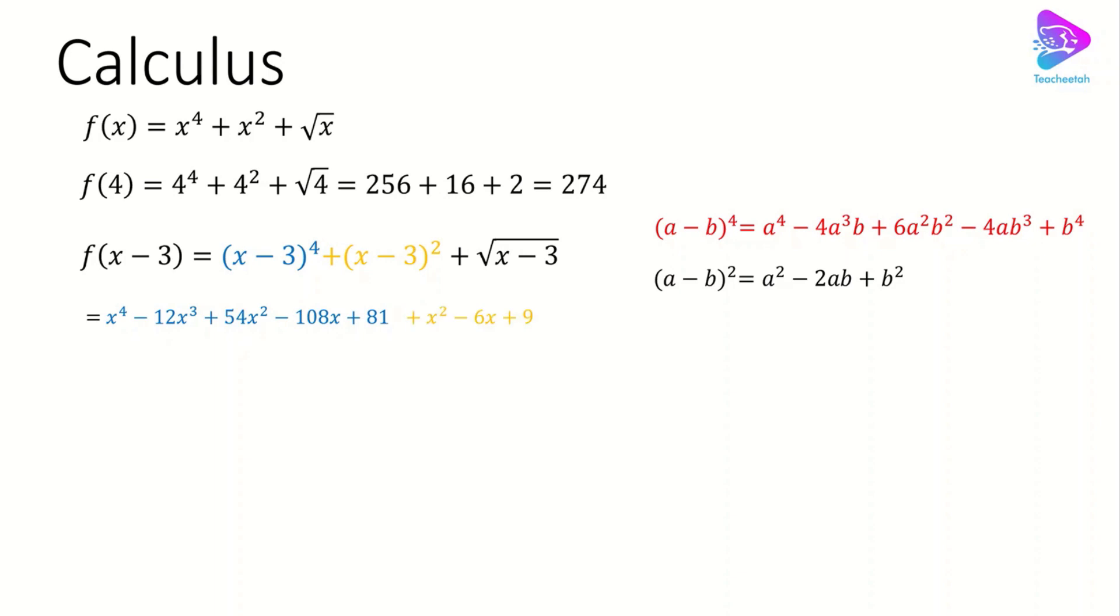Therefore it's going to be x squared minus 6x plus 9, and the very last term is going to stay the same, which is square root of (x minus 3). Finally we have the final answer here, which is x to the power of 4 minus 12x cubed plus 55x squared minus 114x plus 90 plus square root of (x minus 3).